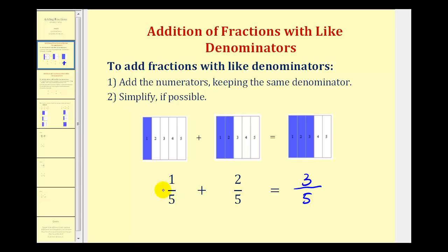If we take a look at the model for this, here's one-fifth, here's two-fifths. If we add these pieces together, notice how they're the same size, and we'll have three pieces, where each piece represents one-fifth, therefore the sum is three-fifths.